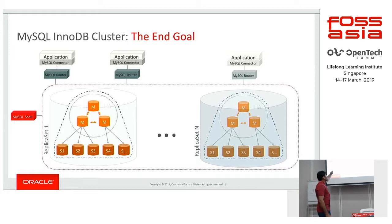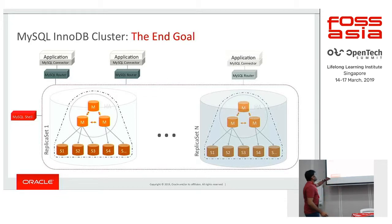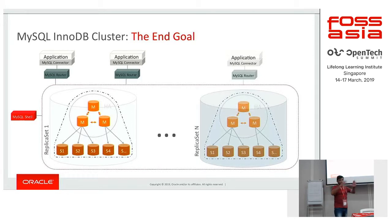In the InnoDB Cluster picture, MySQL Shell can be used for provisioning, management, and removal of any particular server in the cluster. MySQL Router helps in redirecting reads and writes to a particular server as needed. There can be one replica set or it can be extended to N number of replica sets. This gives a complete picture for high availability and disaster recovery.